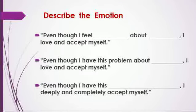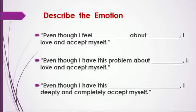Once you've done that, describe the emotion. Here are three possible ways you can do it: 'Even though I feel sad about what happened at school today, I love and accept myself.' Or, 'Even though I have this problem about my relationship with my friend, I love and accept myself.' Or, 'Even though I have this — you name it — I deeply and completely accept myself.' The idea is to take some situation or emotion that we've been blaming ourselves for and to release it and forgive ourselves.